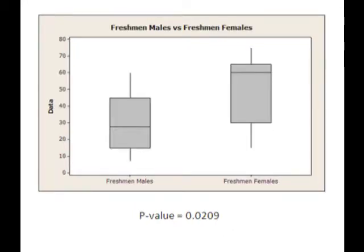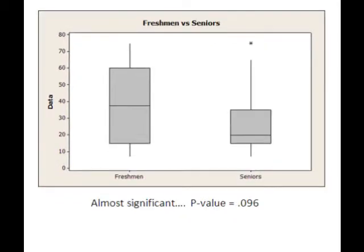The three hypotheses that we were able to reject were underclassmen vs. upperclassmen, males vs. females, and freshmen boys vs. freshmen girls. We were very close to being able to reject freshmen vs. seniors, with a p-value of .096.